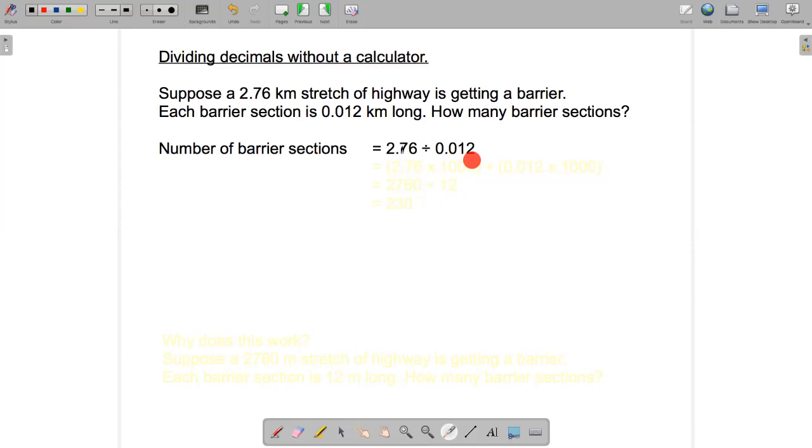and then multiply by 10 three times to change this number into a whole number. Whatever we do to the divisor, we have to do to the dividend as well. And that way we'll make sure that we're creating an equivalent division problem. So we'll multiply 2.76 by 10 three times as well.